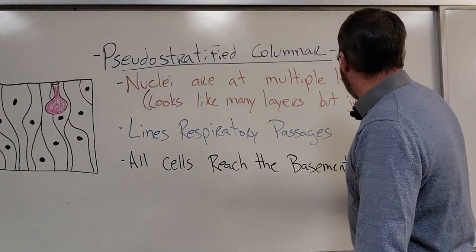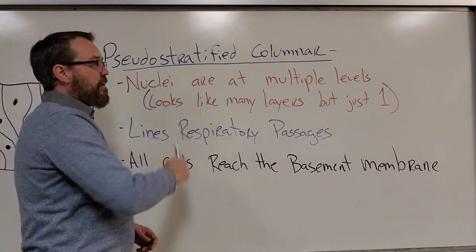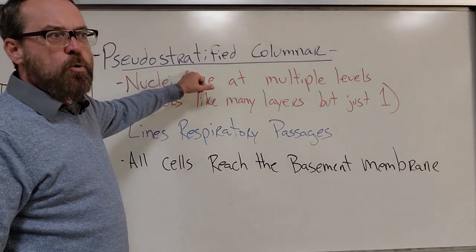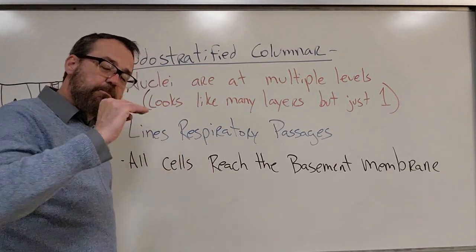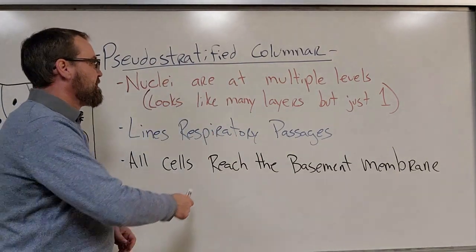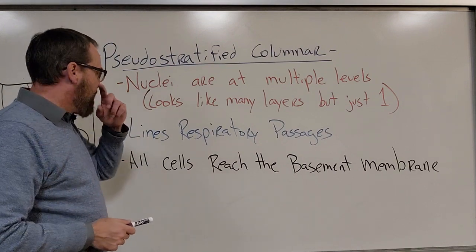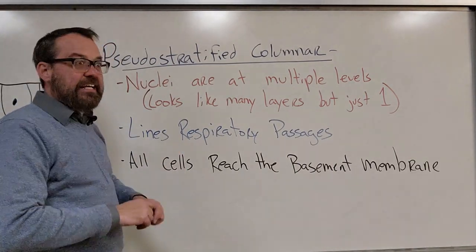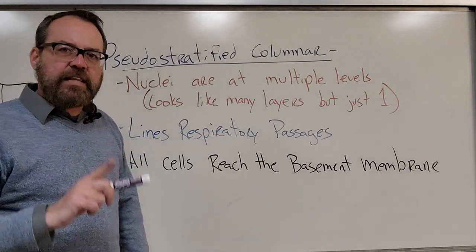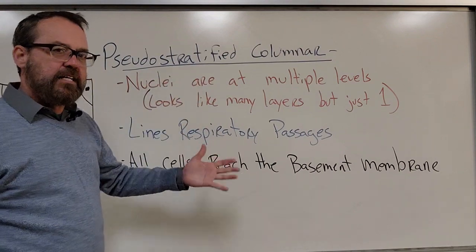Next up: pseudostratified columnar epithelia. Pseudo means fake or false; stratified means two or more layers. So this is 'fake multiple-layer columnar epithelia.' It means our nuclei are at several layers — there's no uniform placement. When you look at it under the microscope, it looks like lots of layers because you see nuclei stacked on top of each other — but it's really just one layer. One layer of cells whose nuclei don't have a distinct position, giving the appearance of multiple layers, hence the name pseudostratified.